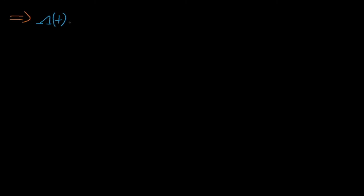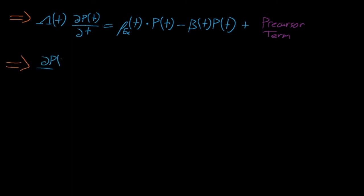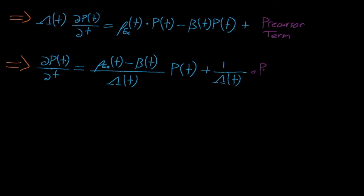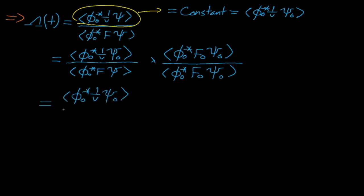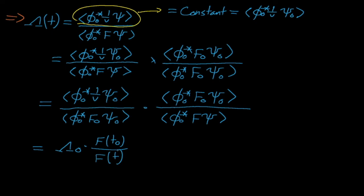So after defining these kinetics parameters, we see that equation 1 contains the effective prompt neutron generation time, the reactivity, the effective delayed neutron fraction, and the precursor source term. We can substitute in these kinetics parameters and divide by lambda t to arrive at dp dt is equal to rho minus beta effective, both divided by lambda t, times the power plus 1 over lambda t times the precursor term. Now let's deal with this precursor term. Because our boundary condition requires that the inner product of phi star naught 1 over v psi remains constant, we can actually replace the flux shape inner product term with the inner product for the initial flux shape psi naught. From here, we multiply and divide by the unperturbed fission source inner product, which reduces to show that lambda t is equal to lambda naught times f of t naught over f of t.